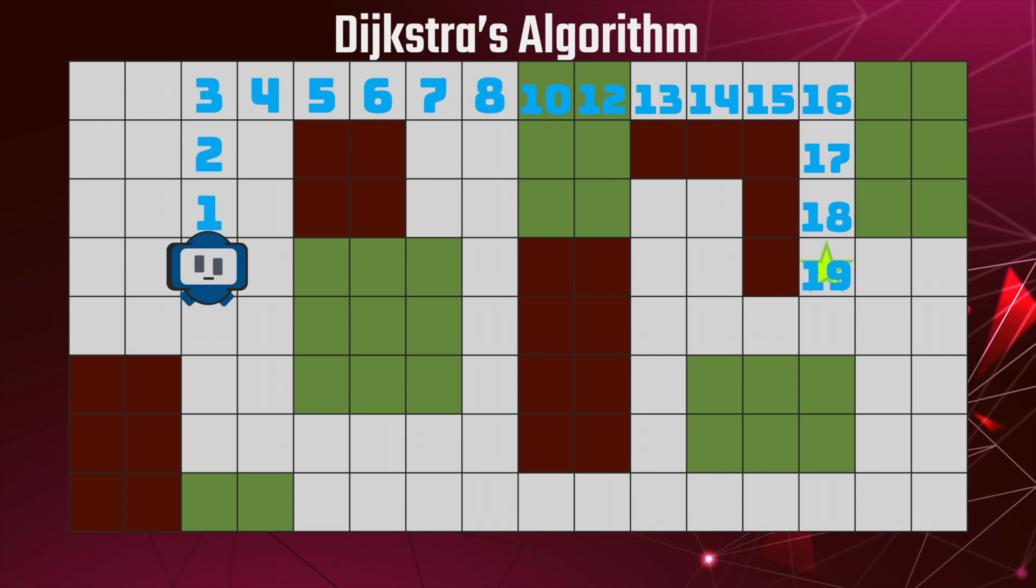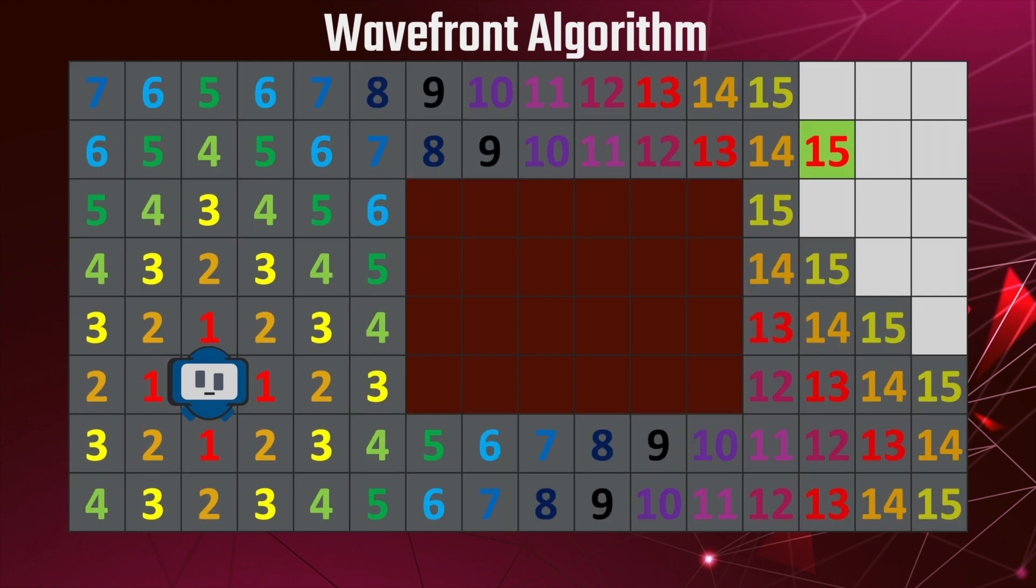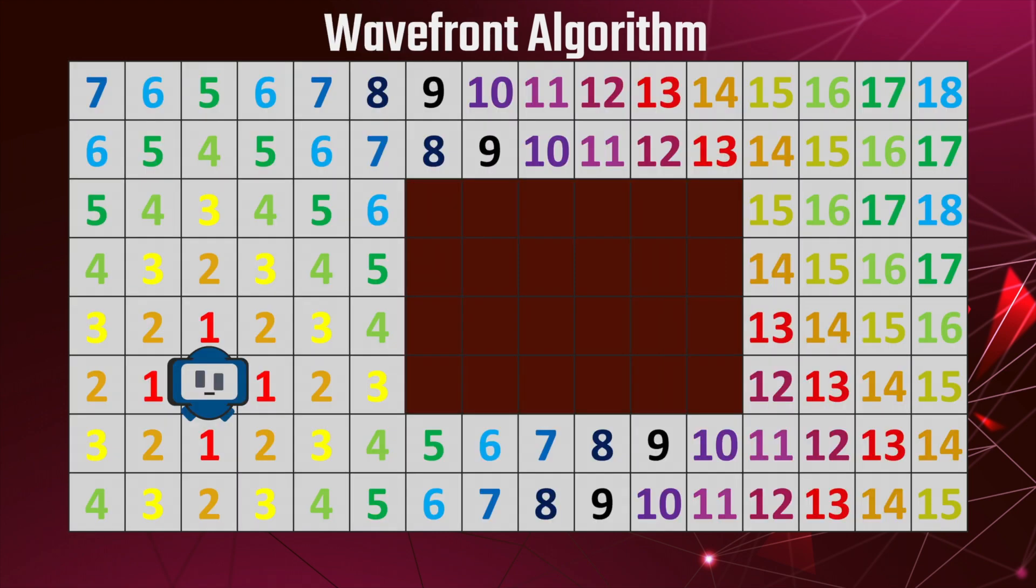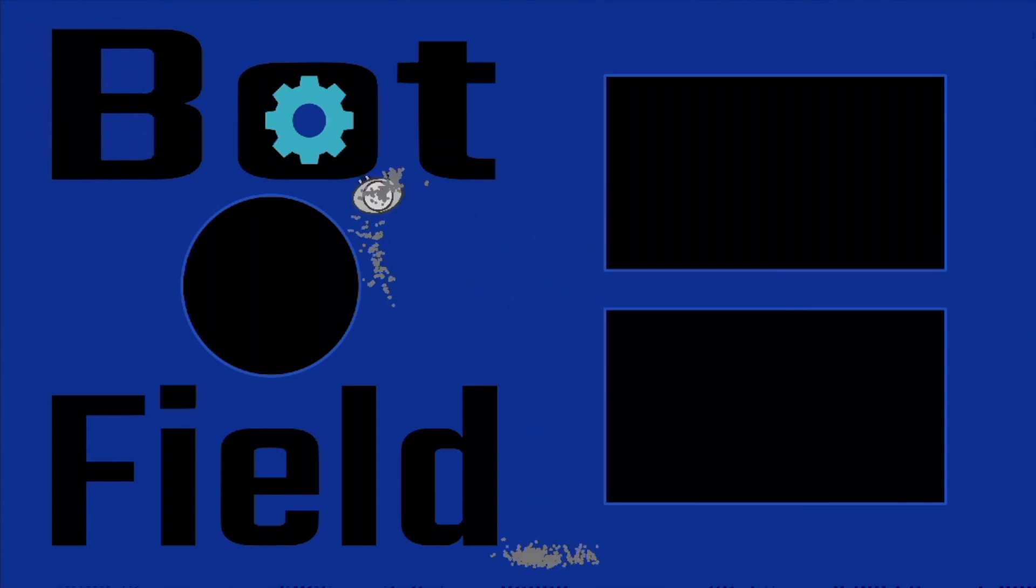But all these algorithms will explore parts of the map that bring them further from the goal. Not only this, but they have to explore a large part of the map in order to find the shortest path. On big maps, that takes a lot of time. That's why both Wavefront and Dijkstra's algorithms are often used to find the shortest path from one node to every other node, rather than the shortest path between two specific nodes. In future videos, we'll be talking about algorithms that are designed to find paths between two nodes as quickly as possible, so don't forget to subscribe.